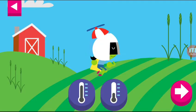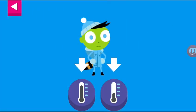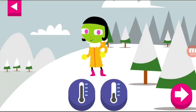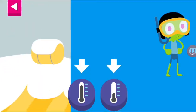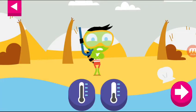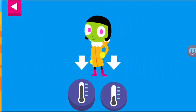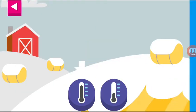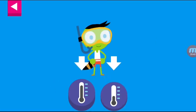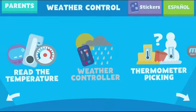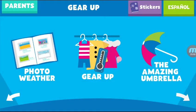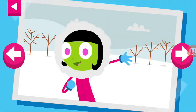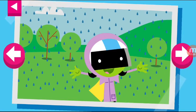D is dressed for a warm day. Dot is ready for warm weather. D is dressed for the cold and bundled up. D is ready for a swim. Dot is ready for a swim. It is cold and snowy. It's a warm day. It's a rainy day.